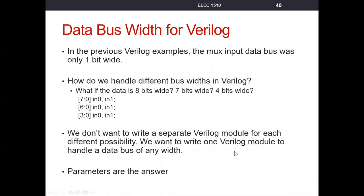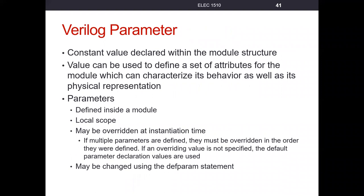Something called parameters will help us do that. A parameter is just a constant value that's declared within the module structure. It can be used to define a set of attributes for the module which can characterize its behavior as well as its physical representation. Parameters have local scope — whatever we set them to, that value is only internal to that module. And we can override it at instantiation time by giving it a default value.